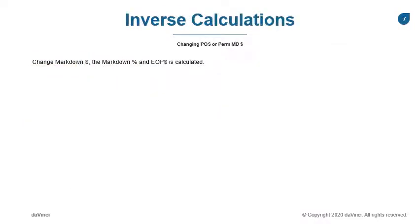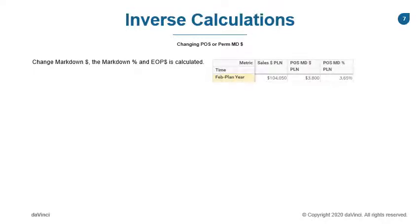In MFP, we have inverse rule calculations. Your POS and permanent markdowns follow these inverse rule calculations. Once you have input your original plan within the metrics — sales, markdown dollars, and markdown rate — when you change a metric, some metrics will hold, and another will update.